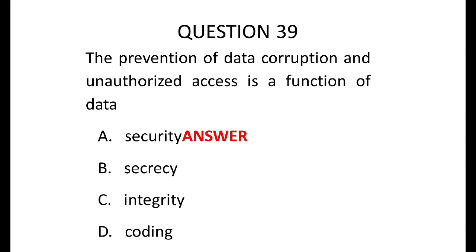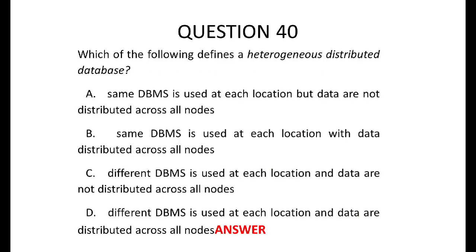Number 40: which of the following defines a heterogeneous distributed database? The answer is D — different databases are used at each location and data are distributed across all nodes.